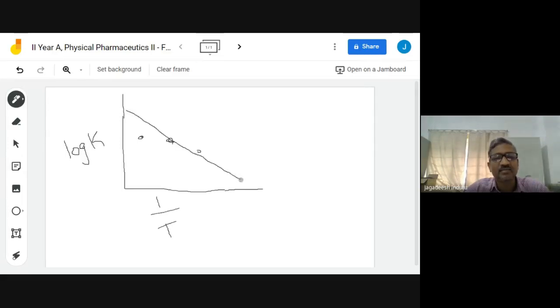This is corresponding to your 60, 60 means 273 plus 60 is equal to 333. 1 by 333 times thousand, that is 10 to the power of 3, whatever the value I have got here that is corresponding to 60.